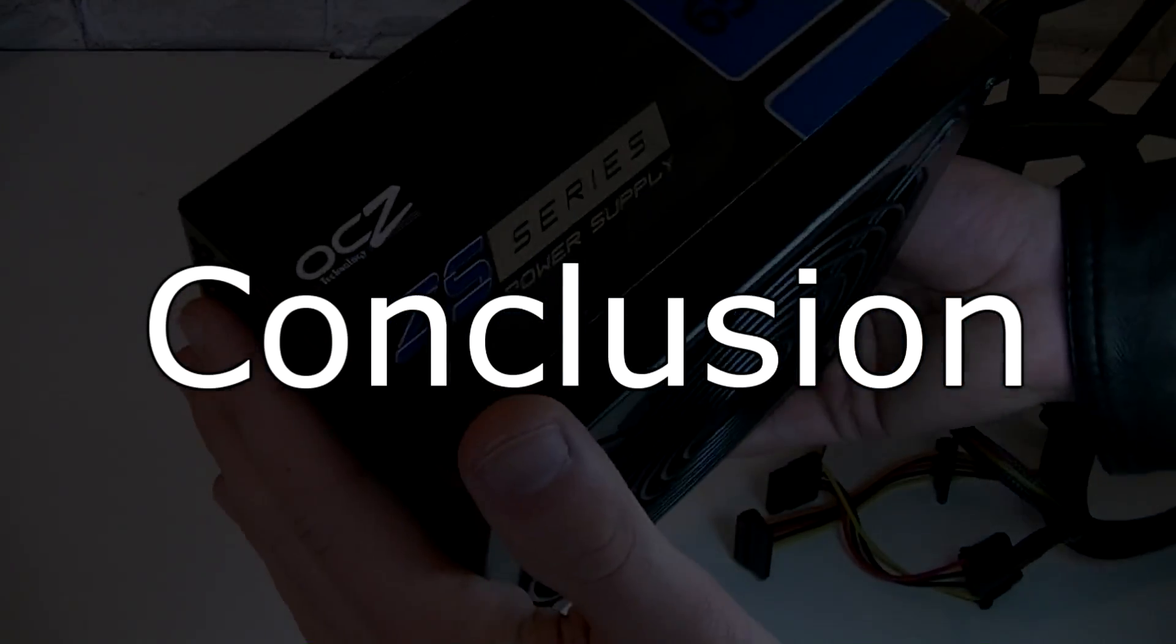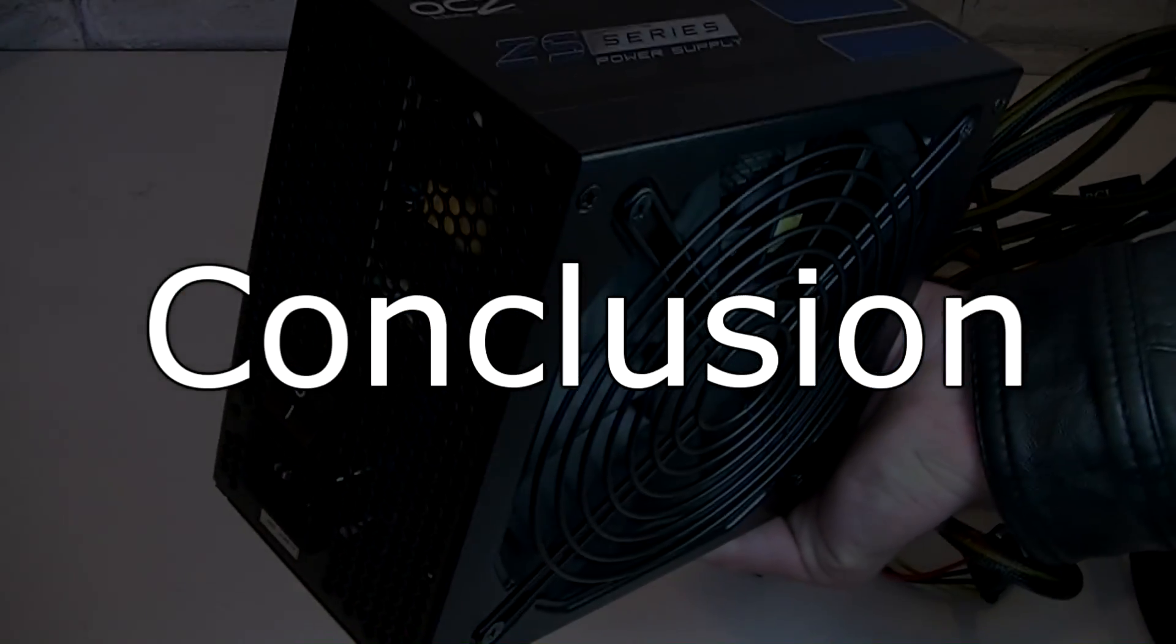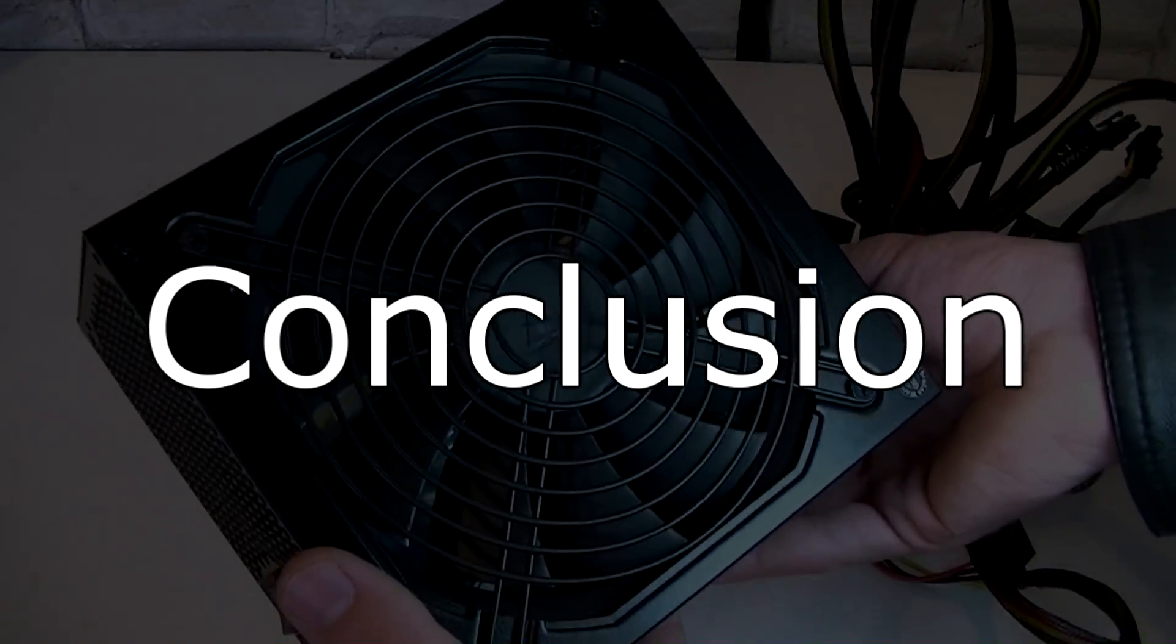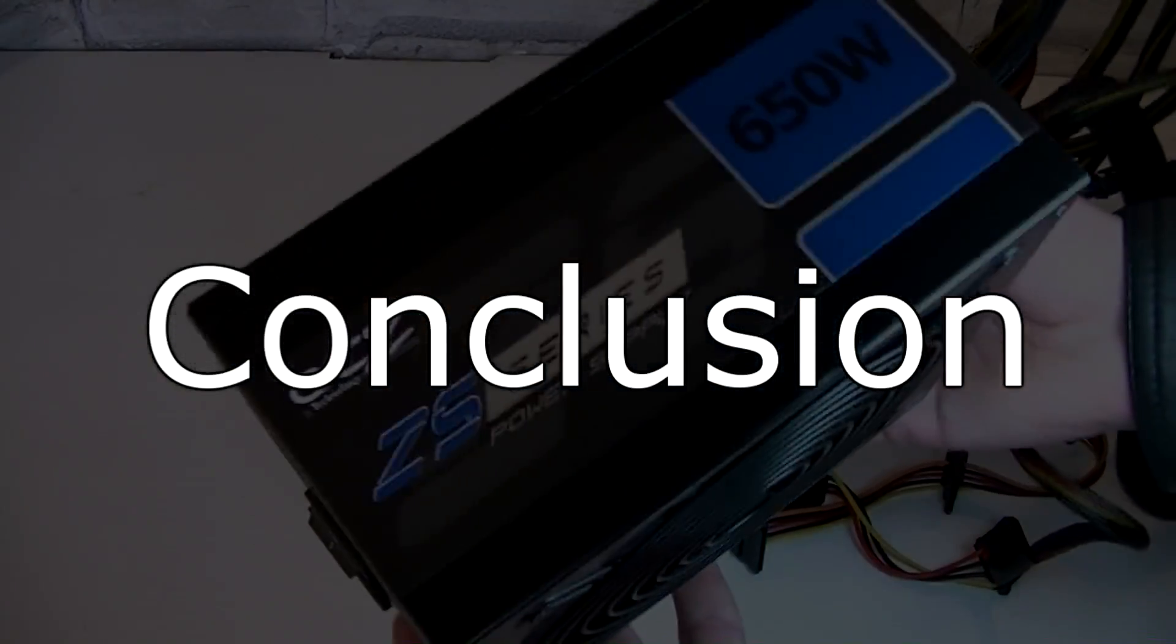If comparing to the Corsair CX 600 V2 unit this OCZ PSU wins in terms of performance because it offers more wattage. But OCZ saved a little money by not fully braiding the ends on the SATA and Molex cables.